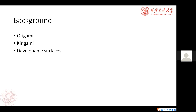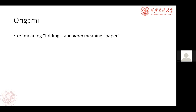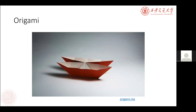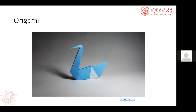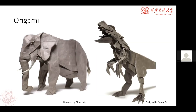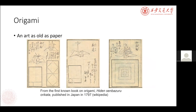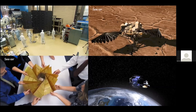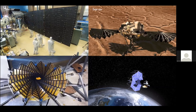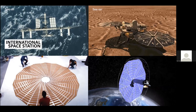Let's look at origami. Origami is a Japanese word meaning paper folding. It's a very old art, and almost everybody has more or less some experience of playing with paper. Here I show some examples of origami — two boats, a swan, and a frog. Someone could make even more complex designs. Origami has a very old history. Here is the first known book about origami, published more than 200 years ago.